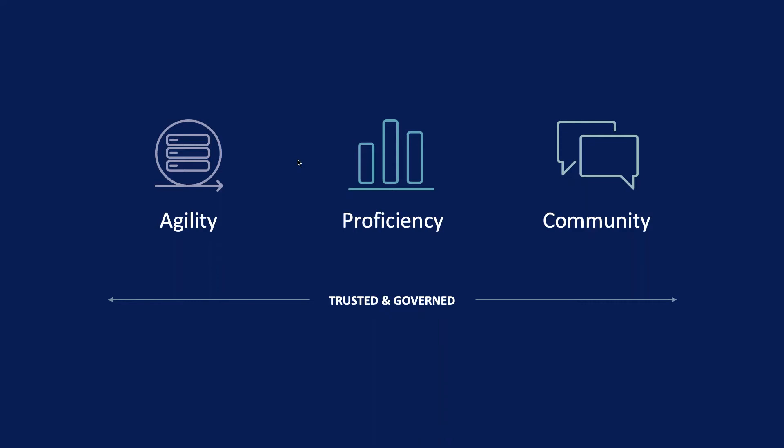Proficiency is making sure users know how and when to use the tool. The third big part is community — creating some buzz around the tool, making sure people see the value it brings to their day-to-day jobs and understand how to use it to gain advantage. On top of all of these, we have trusted and governed processes. But these three buzzwords alone won't immediately make you successful or increase adoption — there's more behind this in the actual Blueprint.